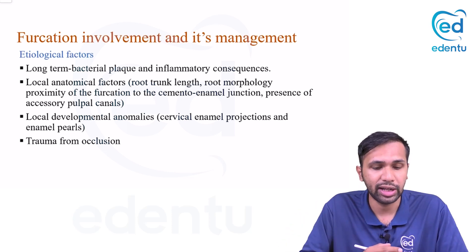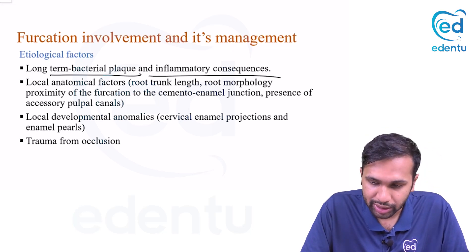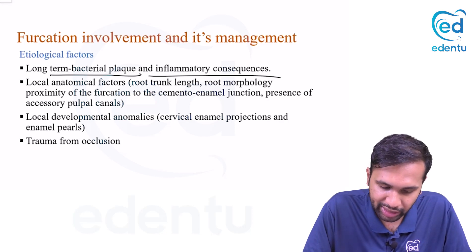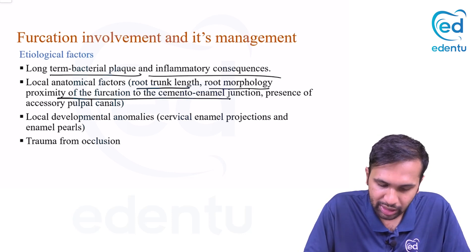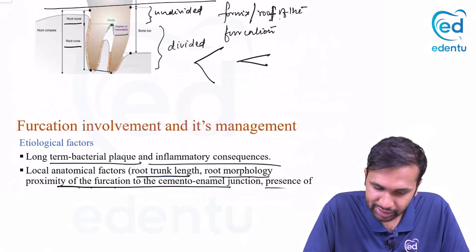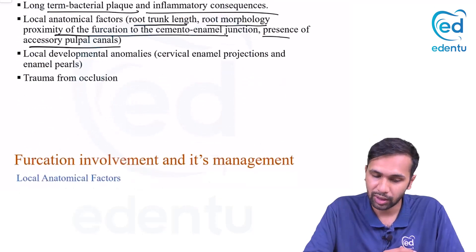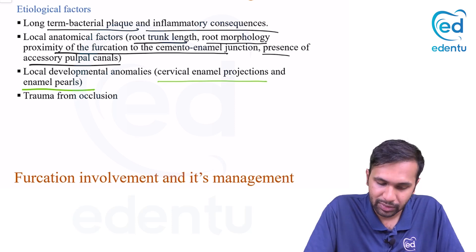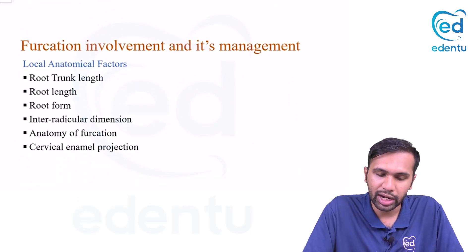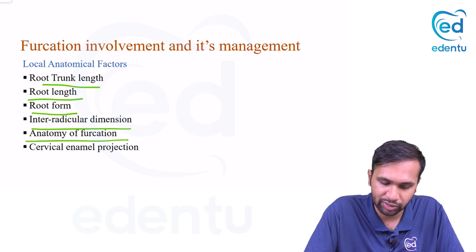The etiology for furcation involvement is the same as any periodontal disease — long-term bacterial plaque and inflammatory consequences, i.e., periodontitis. In addition, there are local anatomical factors: root trunk length, root morphology, proximity of the furcation to the CEJ, presence of accessory pulp canals, and local developmental anomalies like cervical enamel projections and enamel pearls.